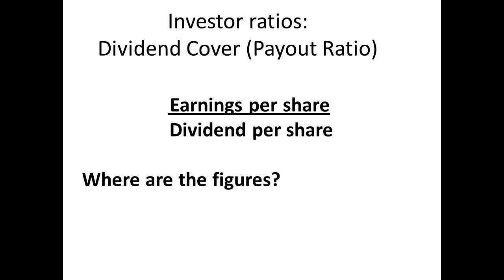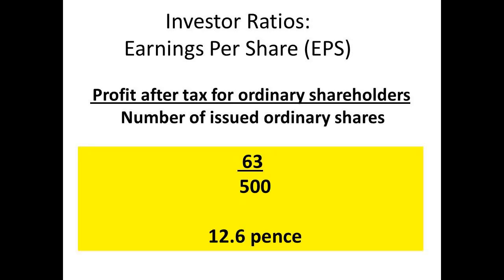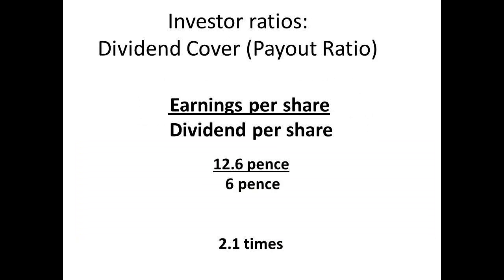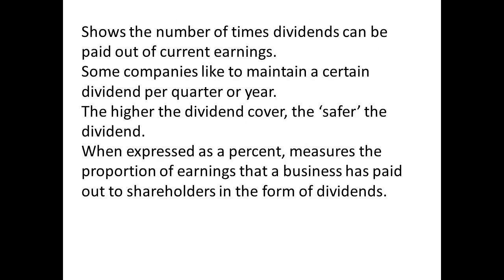The dividend cover is the payout ratio. We divide the earnings per share by the dividend per share. The earnings per share was 12.6p and the dividend per share was 6p. Dividing 12.6 by 6 gives a figure of 2.1 times. This shows the number of times that dividends can be paid out of current earnings. Some companies pay a dividend per quarter. The higher the cover, the safer the dividend may be in the future.